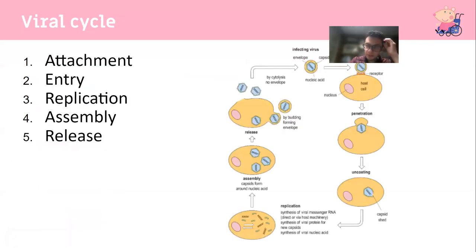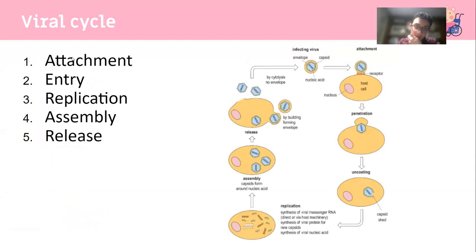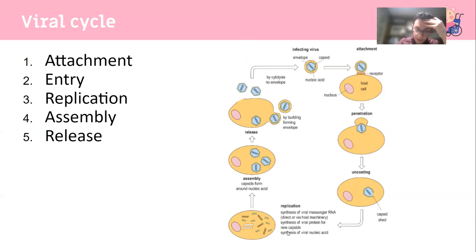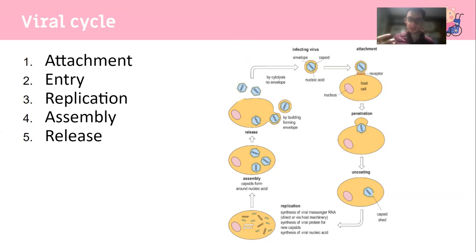The viral replication cycle involves attachment of the virus to the host cell, penetration, and then the protein capsid sheds - releasing free DNA or RNA. The cell's machinery such as DNA polymerase, RNA polymerase, and promoters are used to replicate this genetic material and produce the proteins needed to form the virion structure that eventually buds off with an envelope. Sometimes the metabolic demands of producing viruses are so great that it places strain on the cell and eventually causes it to necrose or apoptose.